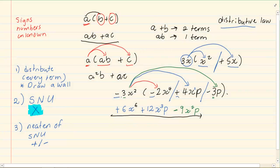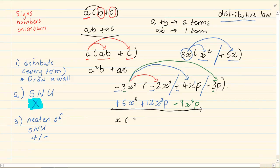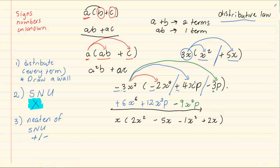Let us do an example that would use all three rules. x into 2x squared plus 5x minus 1x squared plus 2x. Now if we are going to distribute, we are going to put in our wall. We are going to take the algebraic expression outside and distribute it to every term inside.